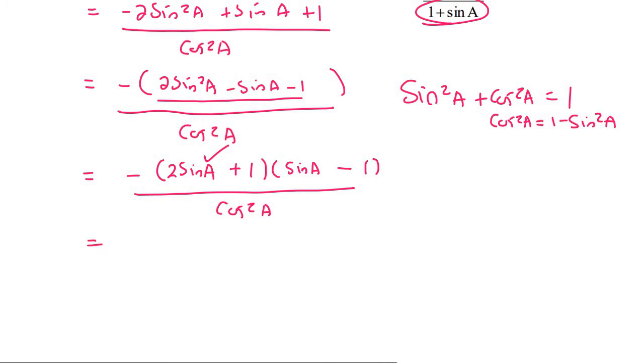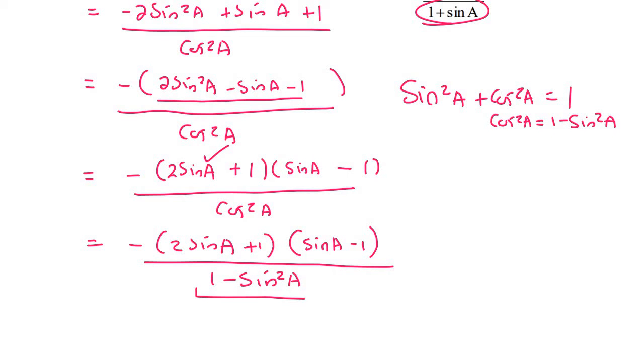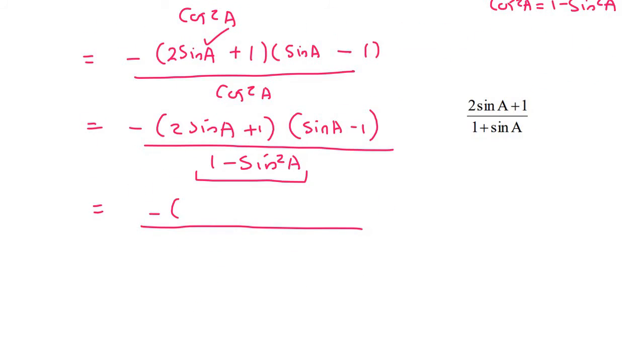And so I'm going to change the bottom into that. So let's just rewrite everything. Then this is a difference of squares or difference between two squares. And so that's going to become, I'm just going to leave the top as it is. And then the bottom will be one minus sin a and one plus sin a.